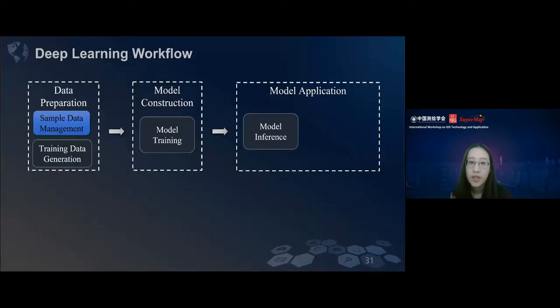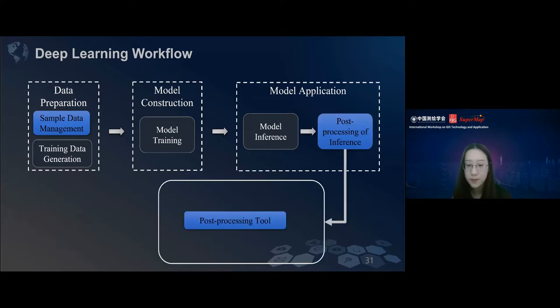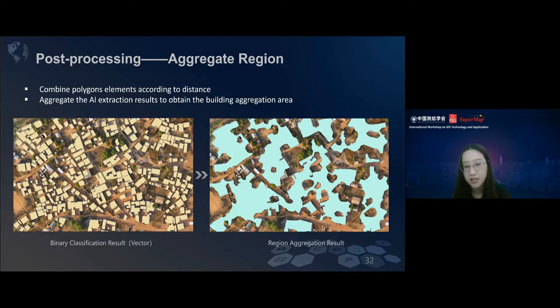In some real use, we found that if the model inference result is not accurate enough, sometimes we need to connect it with some post-processing tools. Those tools can be erosion, dilation, boundary clean, and shrink. These tools are for raster data. For vector data, we have the aggregate tools and the regularize building tools.